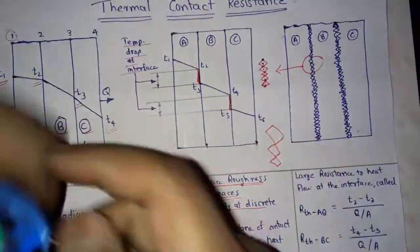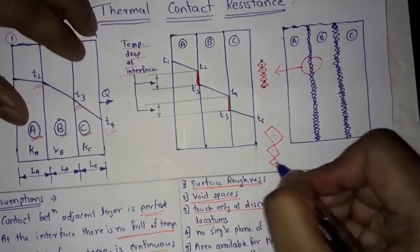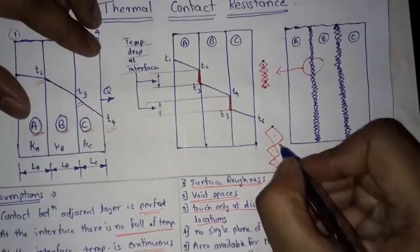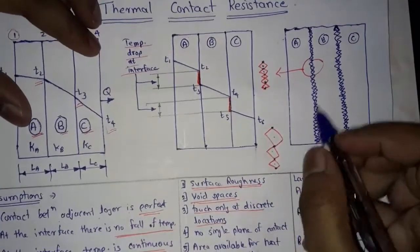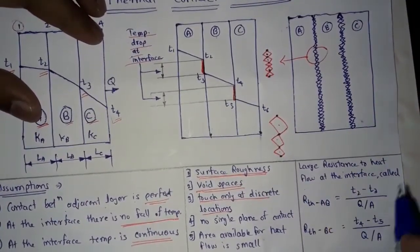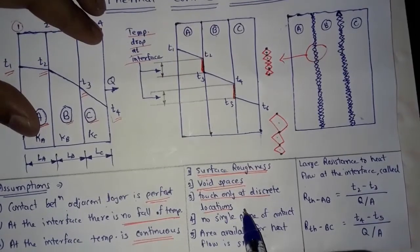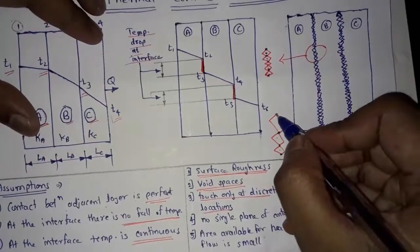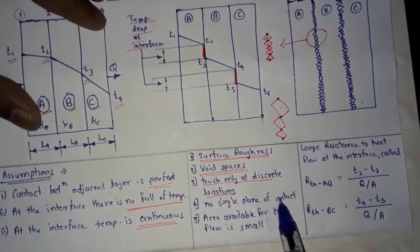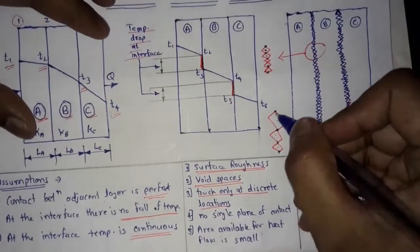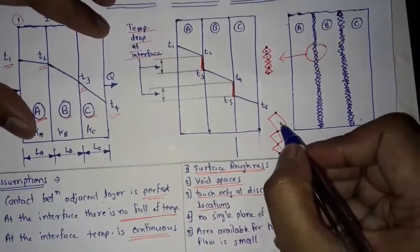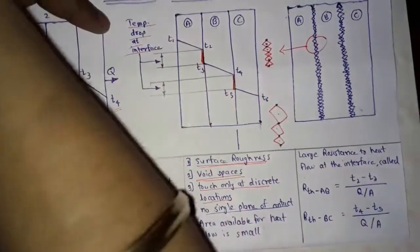As you can see here, these are the void spaces occupied by air, and the walls are in contact only at discrete locations. There is no single plane of contact — there are void spaces throughout.